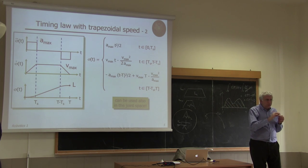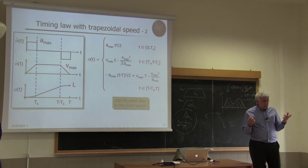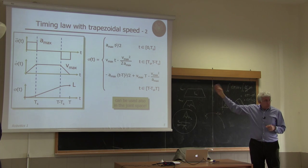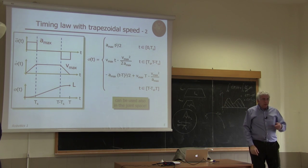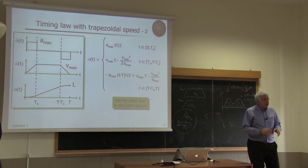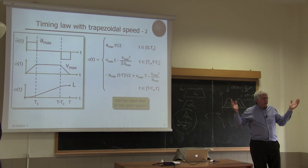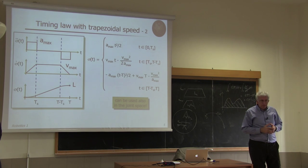You can use a bang-coast-bang timing not only in Cartesian space but also in joint space—for instance, for rest-to-rest motion between two configurations connected by a linear path in joint space. Remember: moving along a linear path in joint space does not mean moving along a linear path in Cartesian space, and vice versa. When you invert the joint-space path, the resulting path in Cartesian space will be something unpredictable, because of the nonlinearity of direct and inverse kinematics.